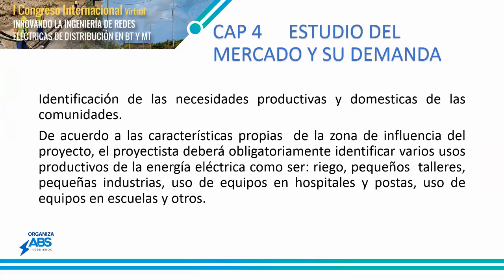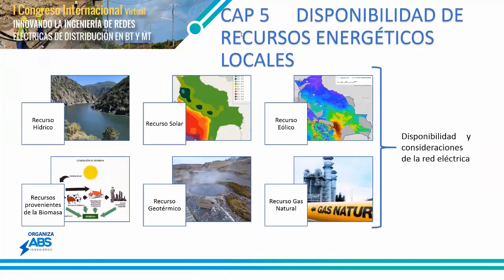After Chapter 4 — the market and demand study, which covers rates, demand, cost increases, and payments — Chapter 5 addresses the availability of local energy resources. For example, there are provinces that can have electrification networks or micro-networks or isolated networks using a water resource. We are now implementing a micro-network of 500 KVA for one community.